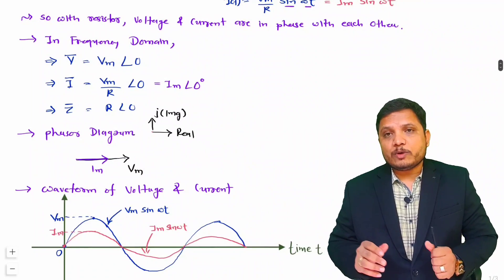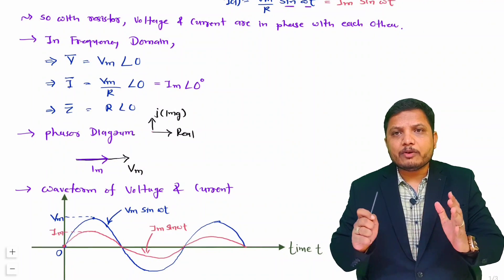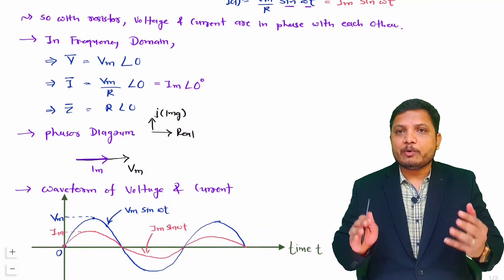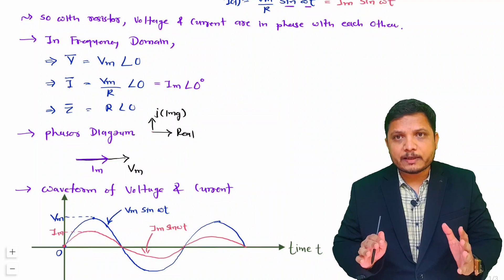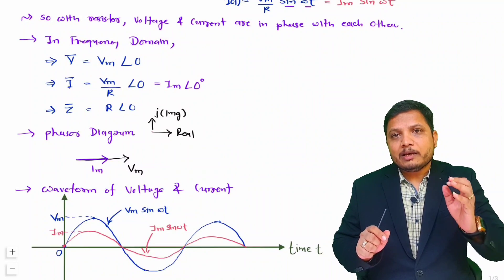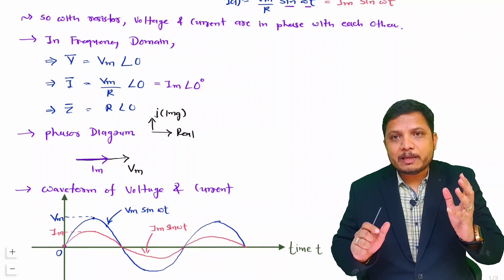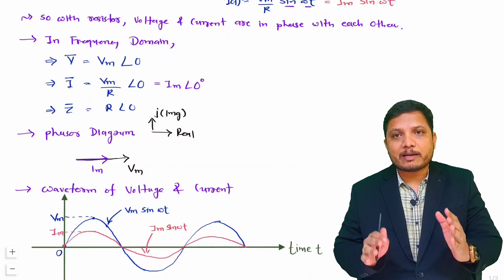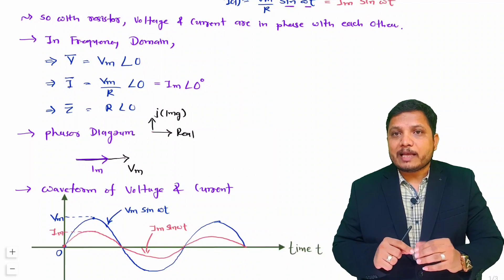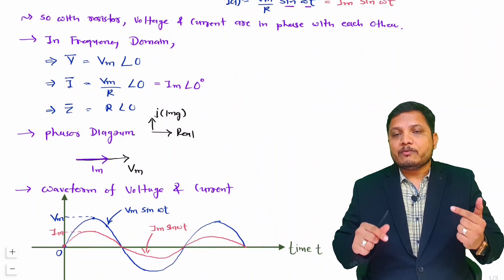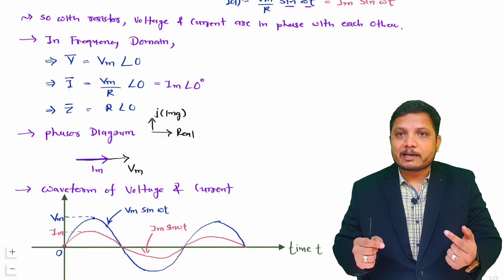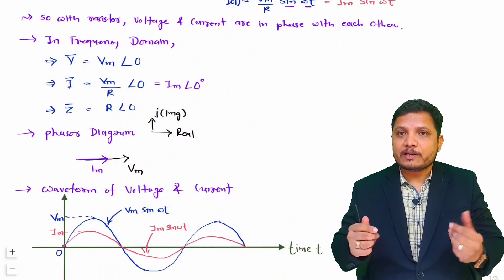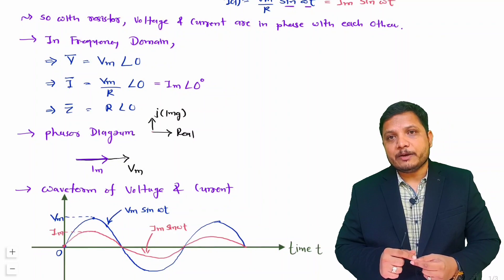So the key takeaway is: whenever you use a resistor, voltage and current are both in phase. You only need to find the magnitude of current, which is voltage divided by resistance. In the next video, I will explain the phasor diagram of an inductor, which will further improve your understanding of phasor diagrams. Thank you so much for watching this video.